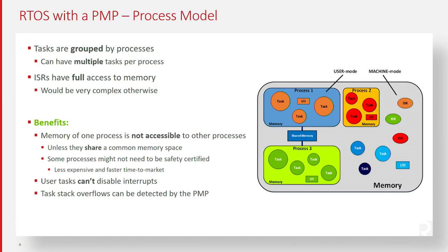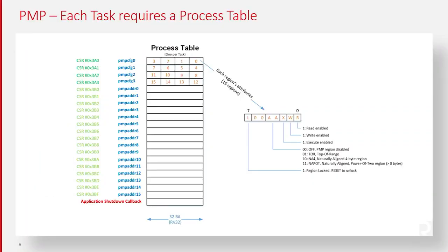The good news is that by using the PMP we're able to isolate all these different tasks into processes, and each process has limitations on what it can do — so we're really protecting the design environment. Each process requires what's called a process table. In the case of the RISC-V PMP, there are 16 addresses used for that, and 16 sets of attributes that determine whether a specific region is write-only, read-only, read-writable, executable or non-executable. These attributes apply to the fencing established around the different processes.